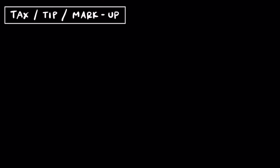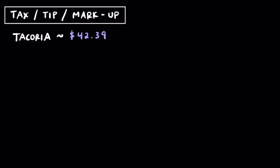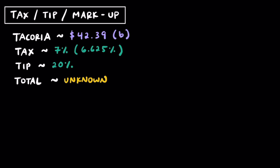Now that we've talked about saving money, let's talk about money you have to pay on top of the original cost. Specifically, we're going to be talking about tax and tip. Consider this situation where you go out to eat at a restaurant called Taqueria, and the total food comes to $42.39. Tax in New Jersey is about 7% — it's actually 6.625%, but we'll round for this video. And we're going to assume we're tipping 20%. Our goal is to find the total cost including tax and tip.